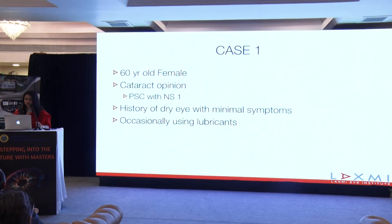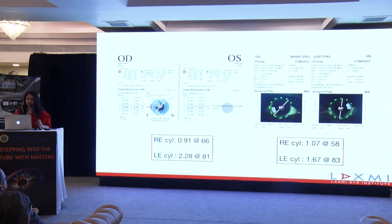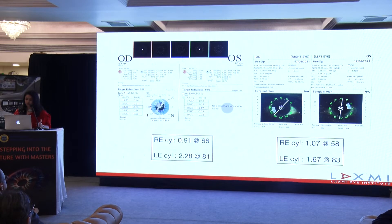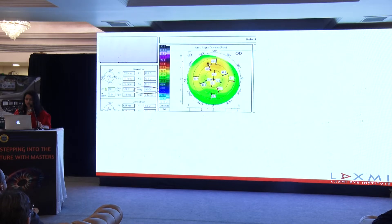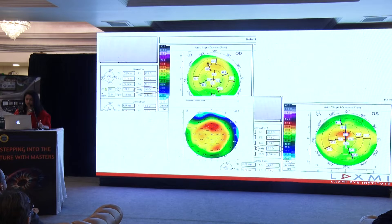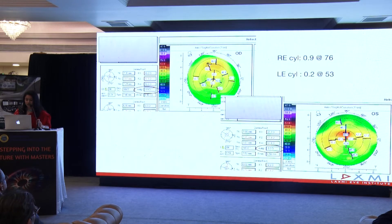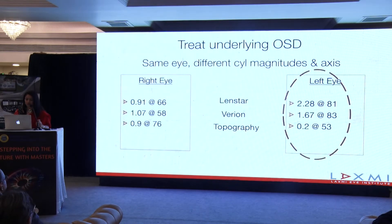This is an interesting case to discuss because it shows what can happen if we don't treat the underlying disease. This patient came for a cataract surgery opinion and gave a history of some dry eye, occasionally using lubricants. She underwent a LENSTAR as well as a Varion scan. It's a good idea to look at multiple data points. The keratometry values from these two machines were not too different, but when we looked at the quality of scans, the reflections were not precise and some were probably more dark than others. Her keratometry on topography was irregular, prominent on the tangential map, and surprisingly the astigmatism for her left eye was recorded at 0.2 diopters versus the 2 diopters recorded with the other instruments — so all three machines showed very different values for her left eye.